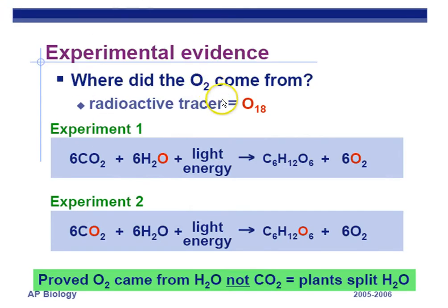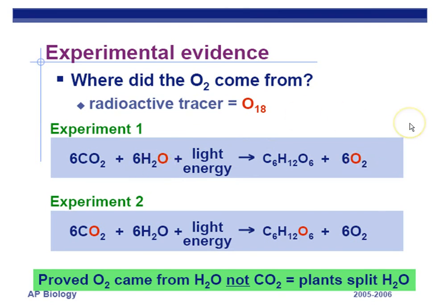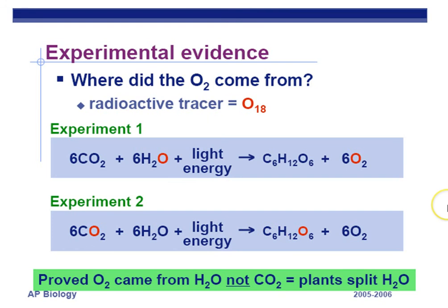How do we know the oxygen came from water? We use radioactive isotopes as tracers — they act the same chemically. Radioactive oxygen was added to water, and at the end of the experiment, the oxygen ended up in the oxygen gas given off — so the oxygen you breathe came from water being split by plants. In a second experiment, radioactive oxygen was added to carbon dioxide, and that oxygen ended up in the sugar molecule made by the Calvin cycle. This is experimental evidence supporting our understanding of photosynthesis.